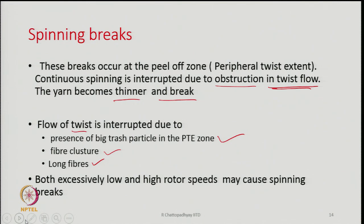If spinning speed is too low, tension in the yarn is less and the flow of torque into the band of fibers is also less — how much torque can flow through a twisted yarn depends on the level of tension. At too low a speed, spinning becomes difficult. At too high a speed, spinning tension becomes extremely high, causing breaks. There is an optimum range of speed — going below it or above it both increase breakage, though for different reasons.